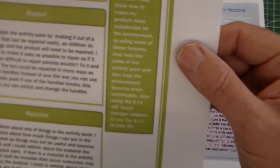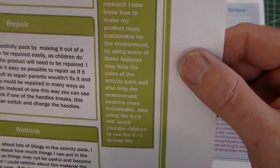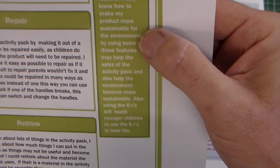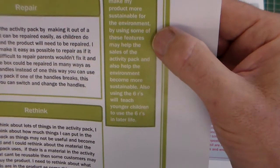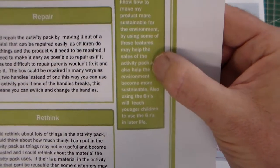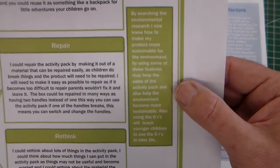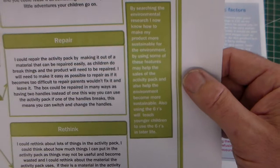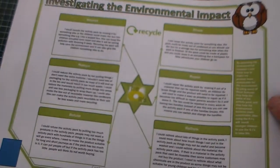If we take a look at this, it says: by searching environmental research I can make my product more sustainable for the environment using some of these key features. It may also help the sales of the activity pack, which is really good. They've recognised in this conclusion that if they make a product that is more environmentally sound and has less environmental impact, then obviously that could be a more successful product.